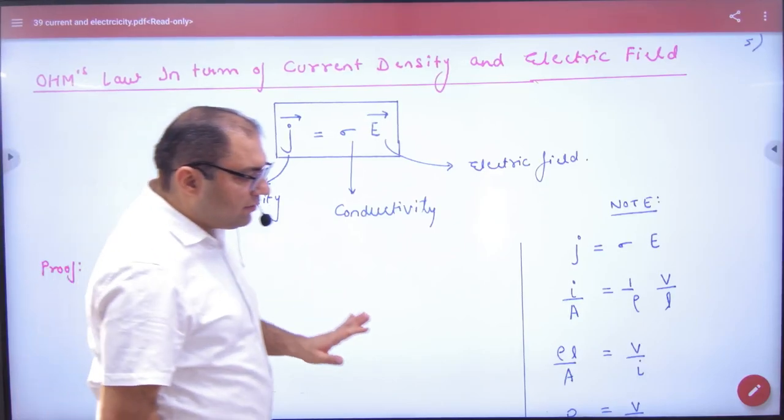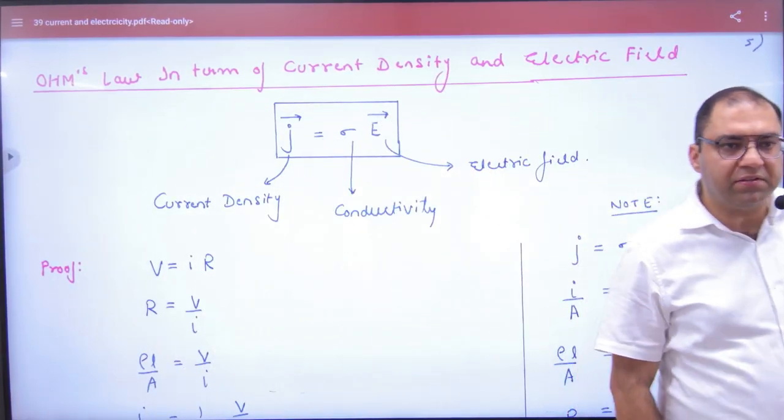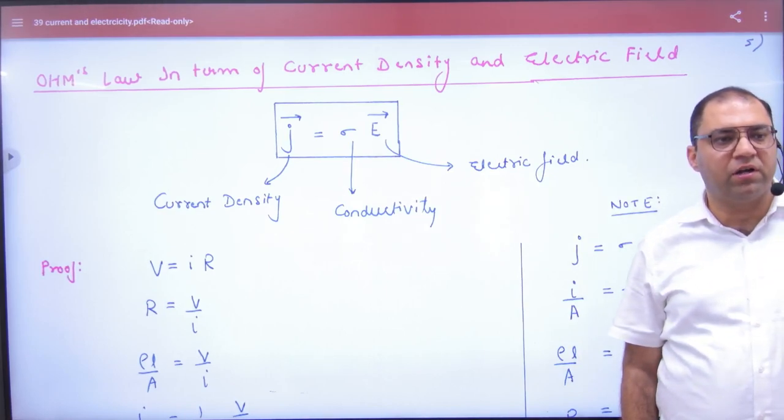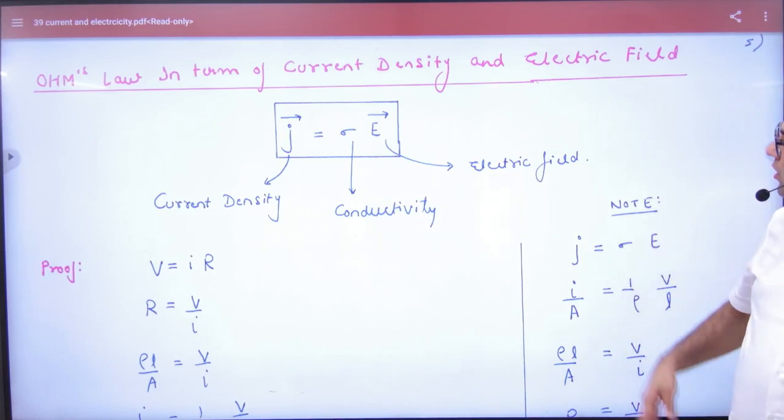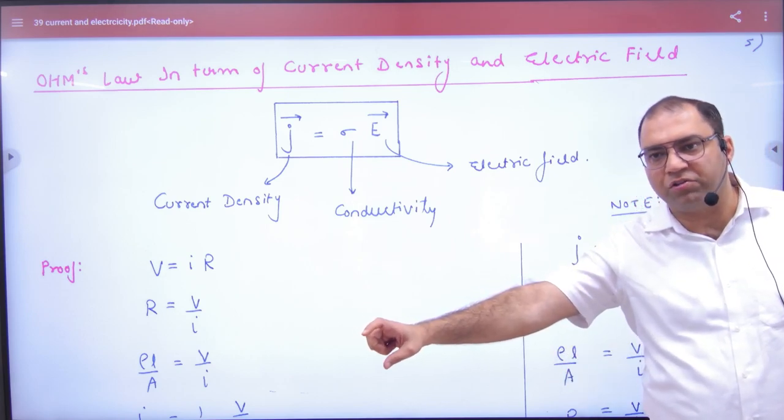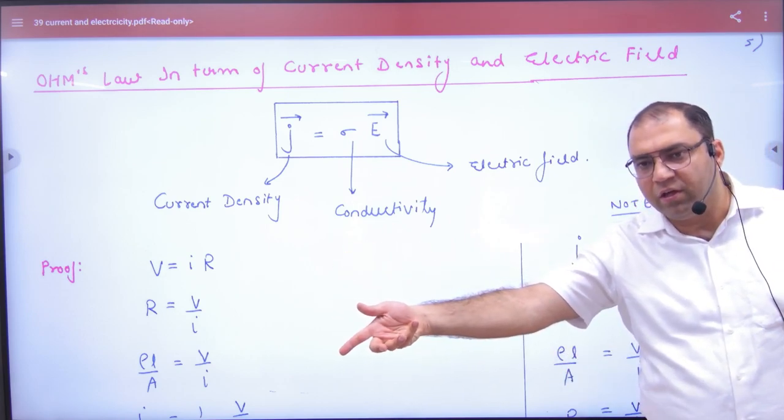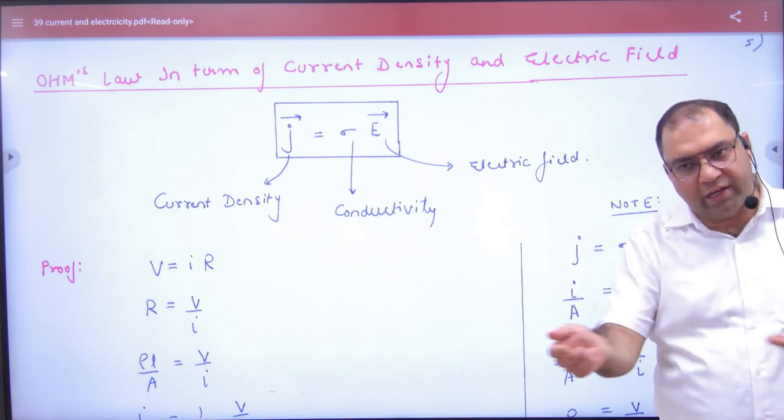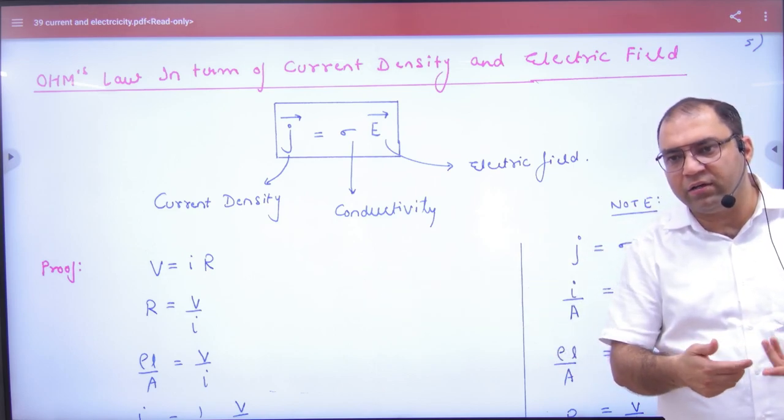Ohm's law in terms of current density and electric field. Current density is J, which means current by area. Electric field E: when you apply electric field to any conductor, potential difference V develops and current comes in cross-section area. Current by area is current density.